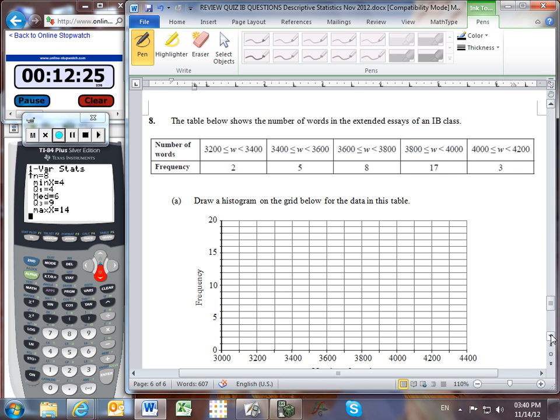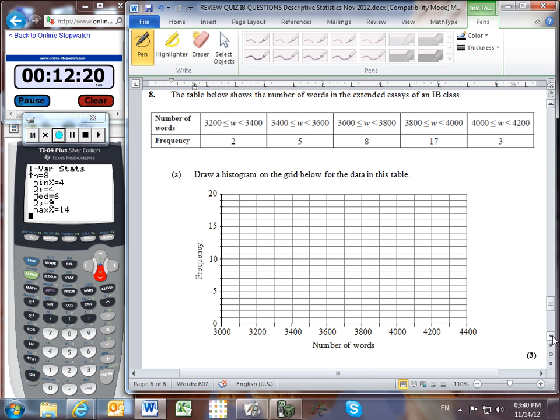So these are the numbers of words for an extended essay. We need to draw a histogram in the grid for this data. So between 3,200 and 3,400, we had a frequency of 2. So a frequency of 2. There it is.